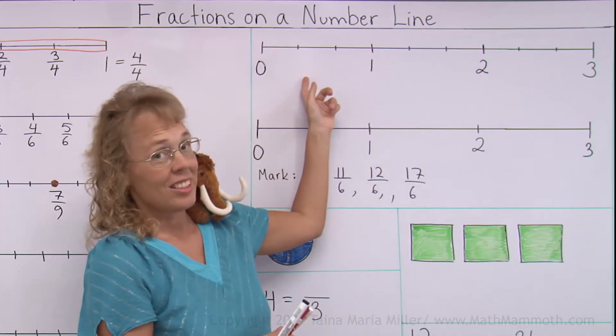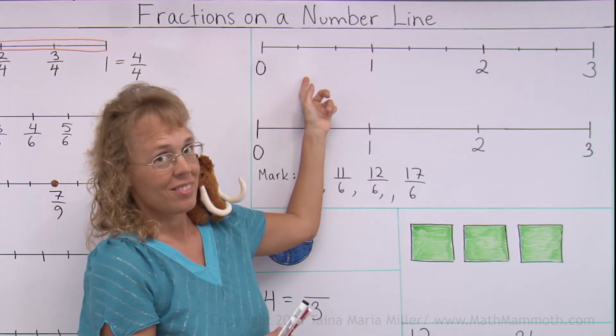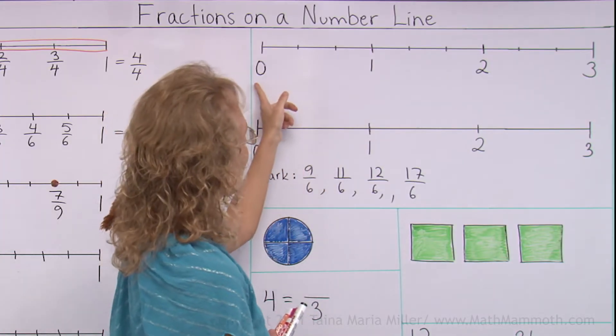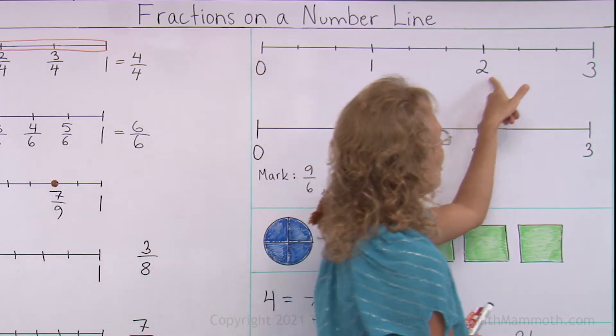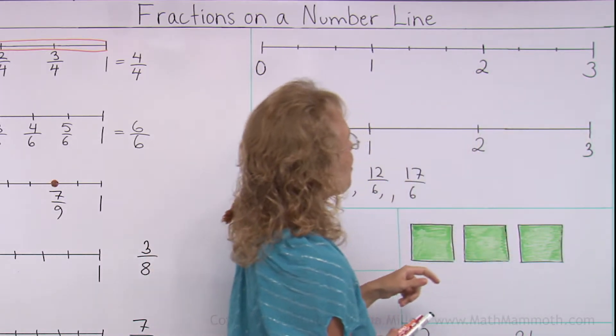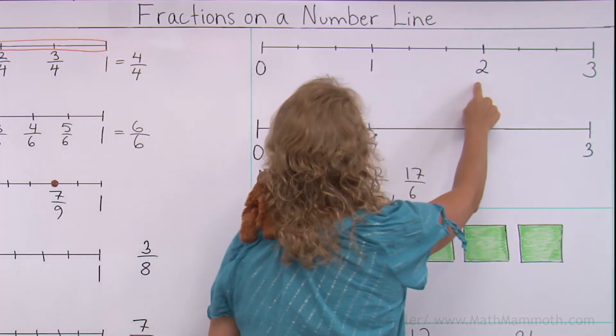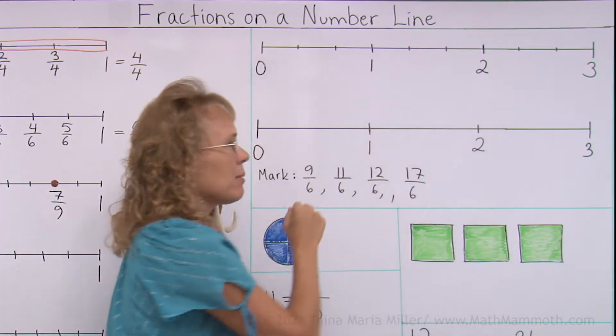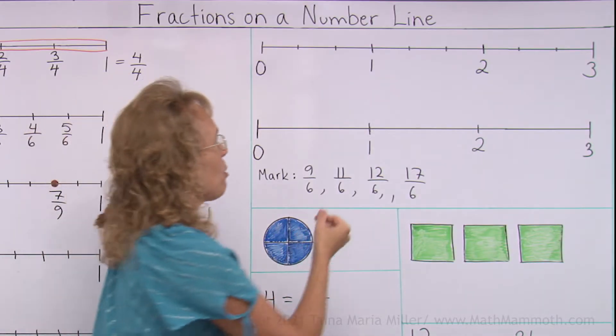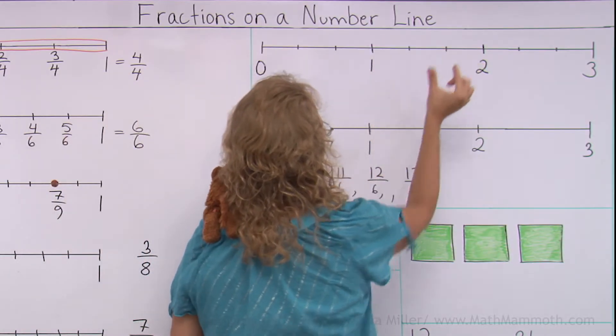This number line doesn't go from 0 to 1, notice that. It goes from 0 to 1 to 2 to 3, and these are whole numbers. And then between each two whole numbers, it is divided into how many equal parts? Three equal parts, like here is 1, 2, 3.